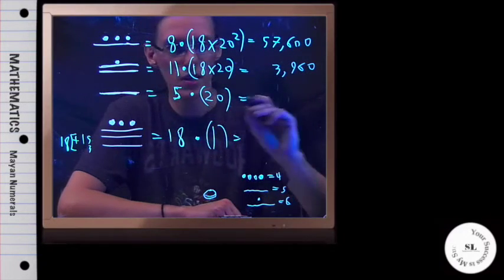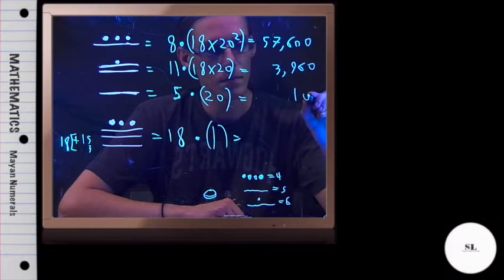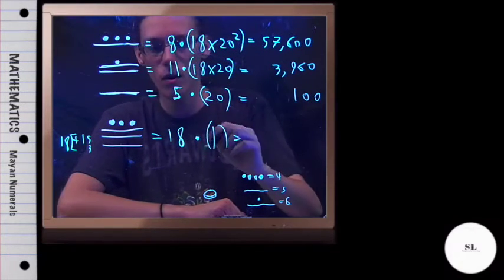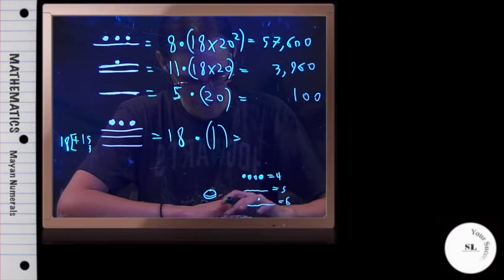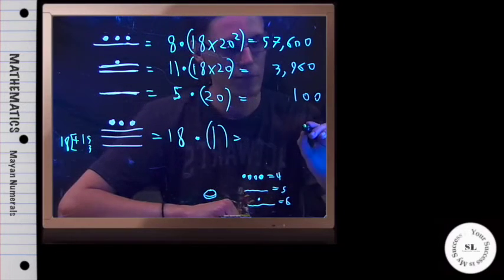Now here I've got 5 times 20, that's 100. And 18 times 1, oh man. Ah, 18. Okay, cool. So there's 18 right there.